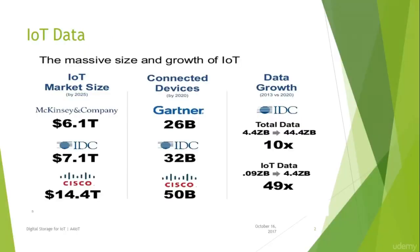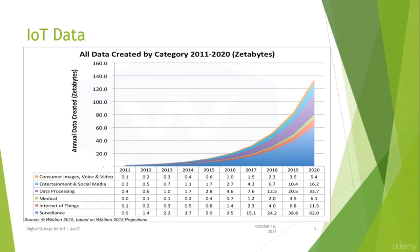IoT has kickstarted the fourth industrial revolution. Market research companies estimate the Internet of Things is a multi-trillion dollar industry worldwide, and by 2020 there will be 30 to 50 billion devices connected to the Internet. These connected sensors and devices will generate a massive amount of data — some estimates put it close to 4 zettabytes, which is 49 times higher than the total recorded data in 2013. The projection till 2020 is in multiples of zettabytes across different IoT verticals.